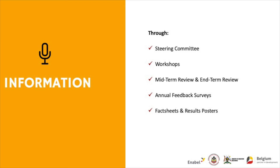People are involved from the planning to the implementation to the reporting. Throughout everything that is done, information is shared through different platforms: steering committee meetings, workshops, annual feedback surveys, and fact sheets and results posters that are printed and pinned in the national teachers colleges. The workshops may involve students, lecturers, and everyone else, either online or face to face. This demonstrates the transparency and engagement that everyone has in each and every activity done within the project.